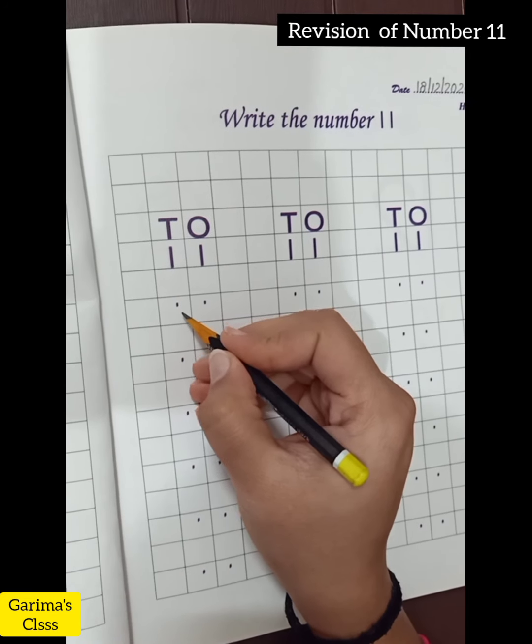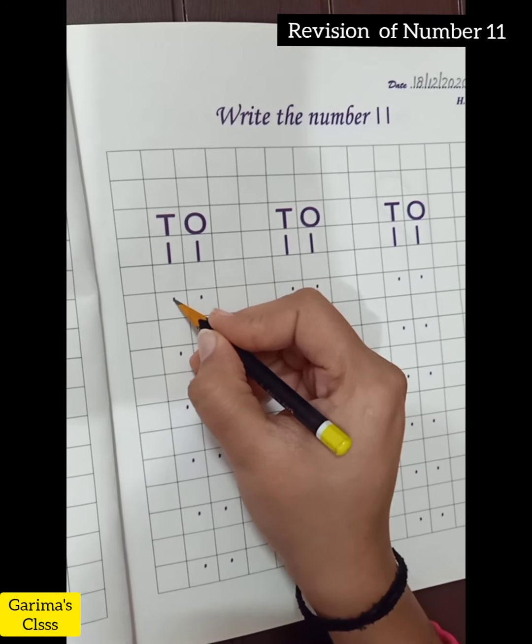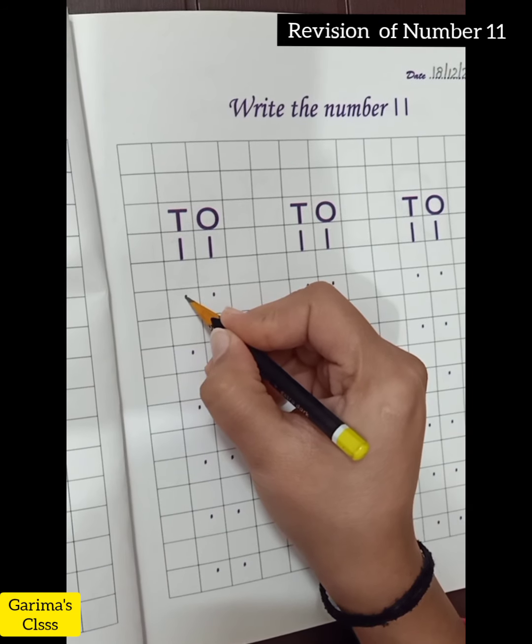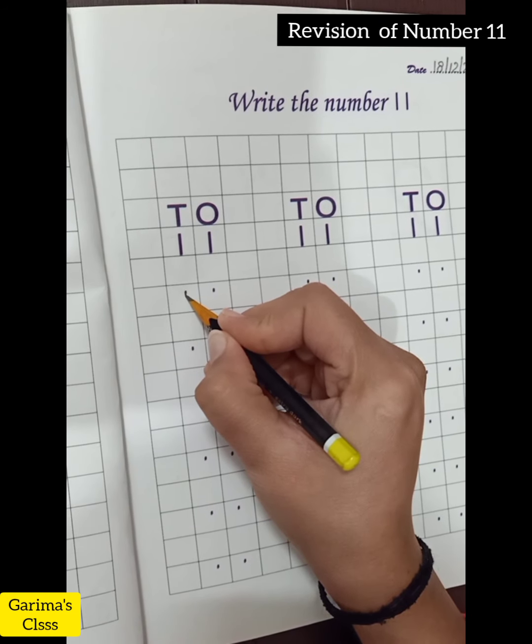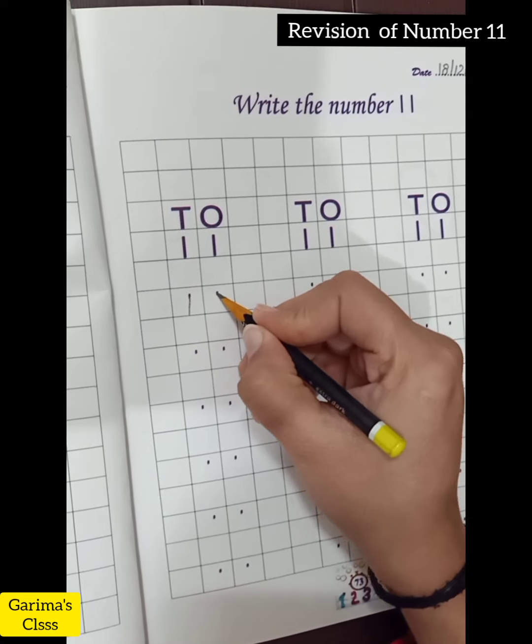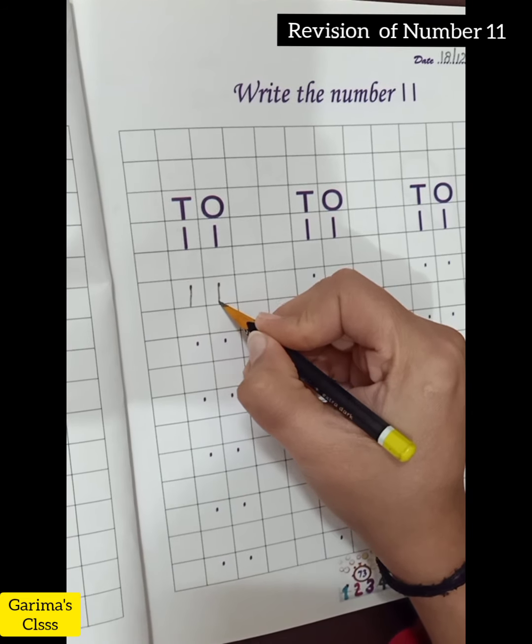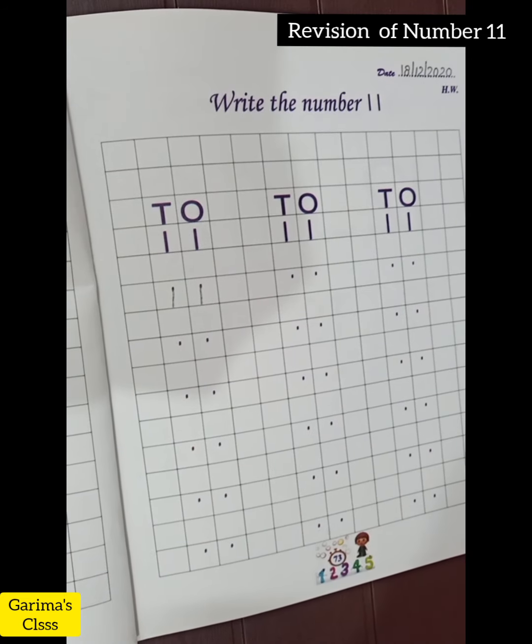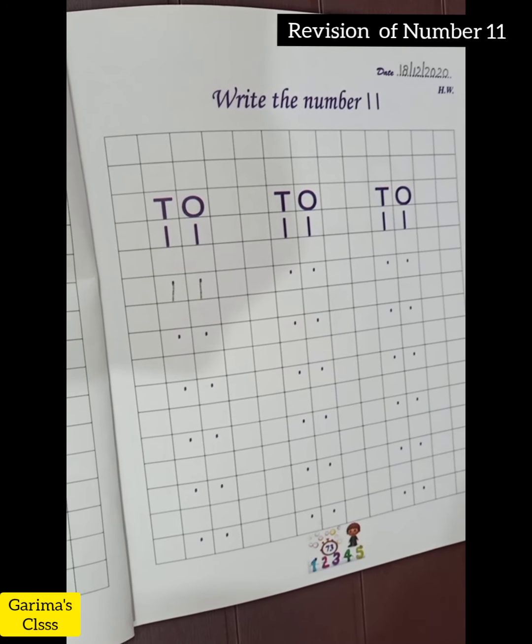You have to put dots on the top of the pencil. You have to put number one and to bottom line, number one. Again, you will have to do number one. The next one you have to do number one. One, one, eleven. Okay kids, you will do good things.